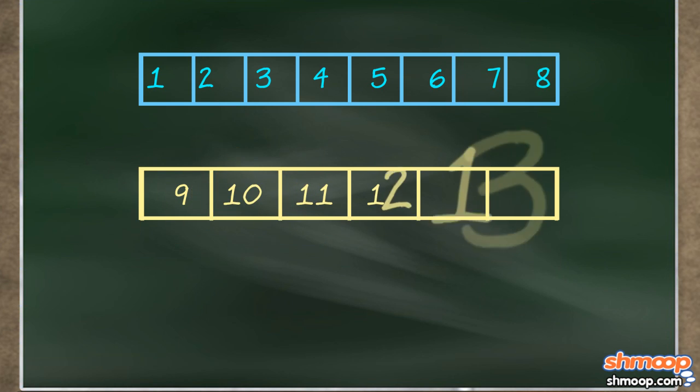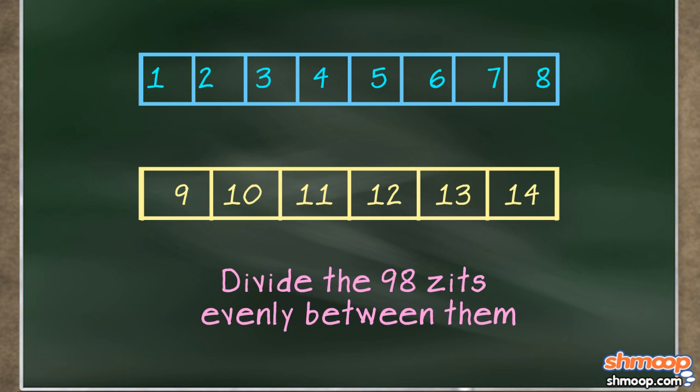So really, we've got 14 total rectangles, and we have to divide the 98 zits evenly between them. So it looks like a simple division problem, right? 98 divided by 14 is 7.